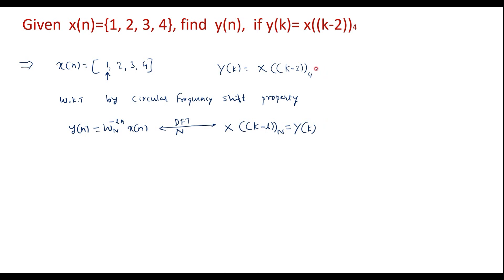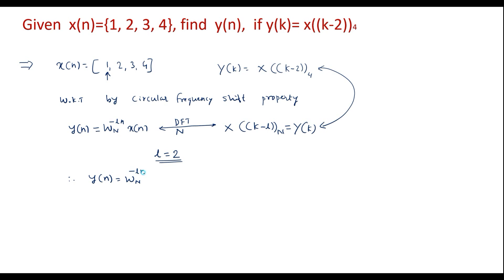Comparing this expression with y(k) = x((k-2))₄, we can say that l is equal to 2. Therefore y(n) is equal to W_4^(-2n) · x(n).